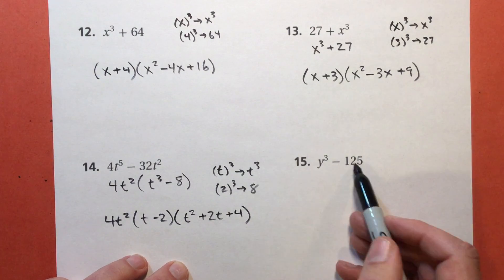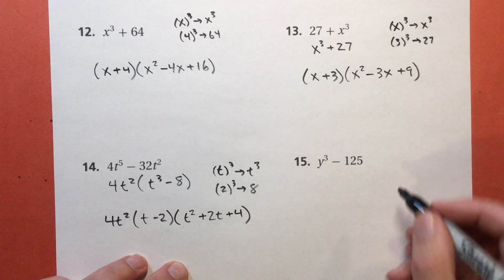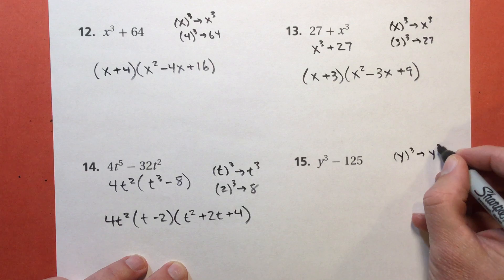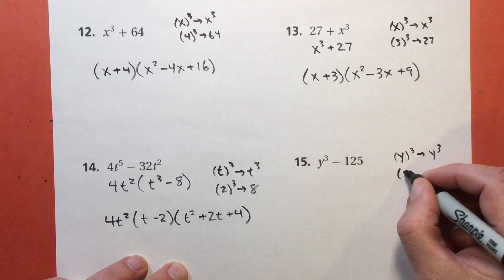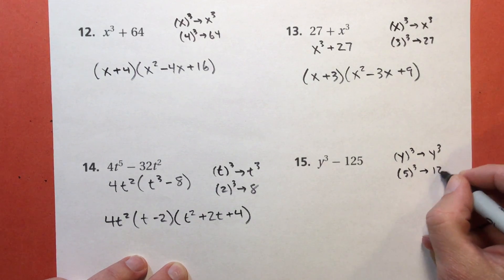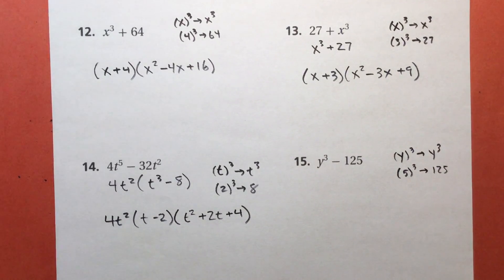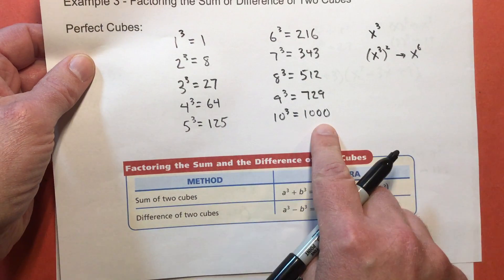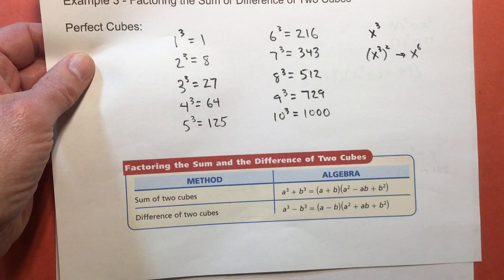And number 15, no GCF. Should always check it. Y to the third power gives me my Y to the third power, obviously. And 5 to the third power. Finally, something other than 8 gives me my 125. Where's my list? It's right there. Have you noticed that I have not used any of these at all? They may show up in your homework.